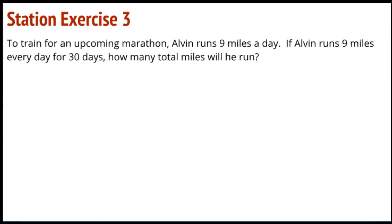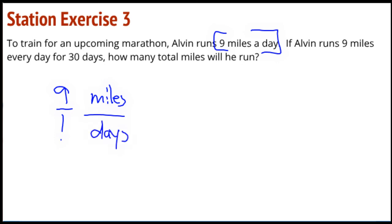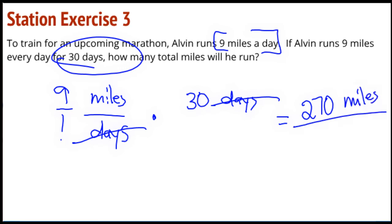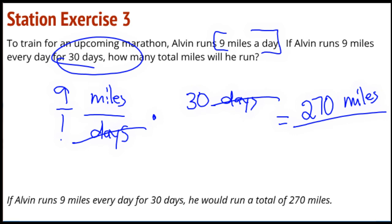Station 3: To train for an upcoming marathon, Alvin runs 9 miles a day — my brain just screamed that this is a rate. I have a unit rate of 9 over 1 with miles and days. We're going to scale it up to 30 days, and the days divide each other out. So I will have 9 miles times 30, which gives me 270 miles. If Alvin runs 9 miles every day for 30 days, he would run a total of 270 miles.